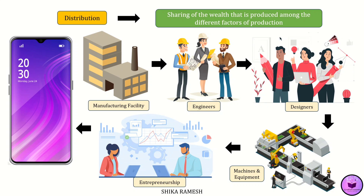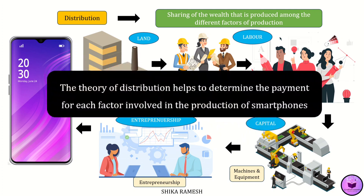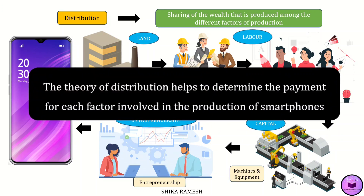In this example, the entire process from extracting raw materials to the distribution of the final product — the smartphone — involves various factors of production. The theory of distribution helps determine the payment for each factor involved in the production of smartphones.